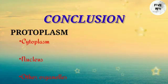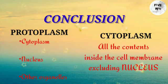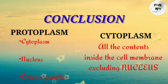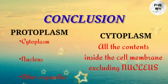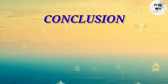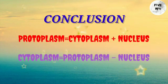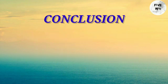Protoplasm includes the cytoplasm, nucleus, and other organelles. But cytoplasm includes all the contents inside the cell membrane excluding the nucleus. So: protoplasm = cytoplasm + nucleus, and cytoplasm = protoplasm − nucleus.